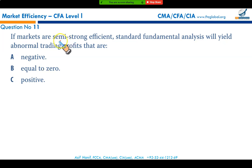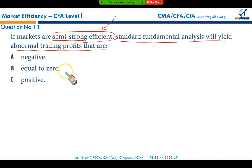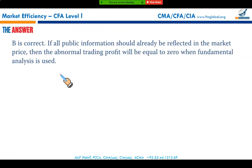If markets are semi-strong efficient, standard fundamental analysis will yield abnormal trading profits that are zero. Semi-strong efficiency means all public data and past price and volume information is reflected in the share price, so it will not be possible to make abnormal trading profits. Abnormal trading profits would equal zero.